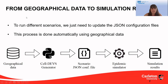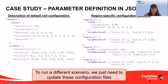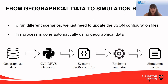That's why we have provided a process that goes directly from geographical data to simulation results. Basically, from the geographical data for this model we retrieve the population, the different neighborhoods, and use the geographical data to calculate the correlation factor. To do that, we use our cell-DEVS generator, which also takes the parameters of the disease and produces a JSON configuration file for the scenario. We read that JSON configuration file in our epidemic simulator and generate the simulation results.